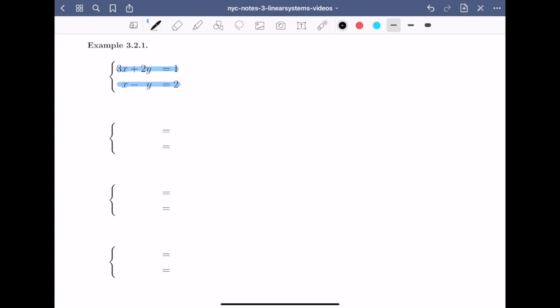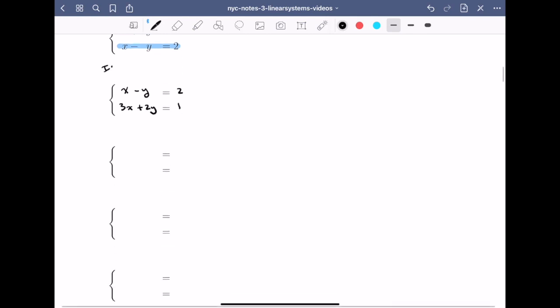The first thing I want you to observe is that I can change the order of the equations without changing the solution set. So I can replace the linear system as written with the following: x minus y equals 2, and 3x plus 2y equals 1. This is the first observation, which we'll record at the bottom.